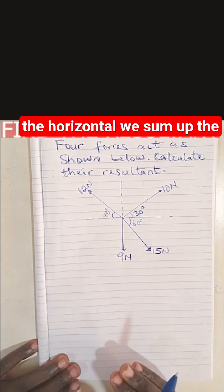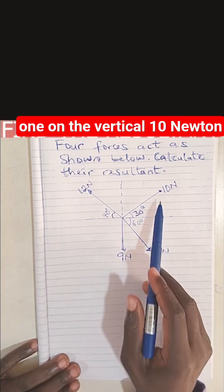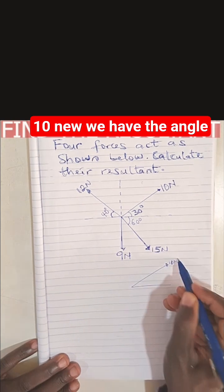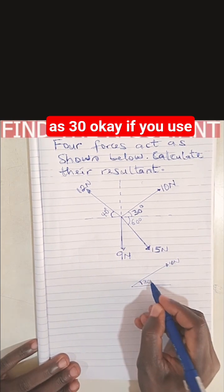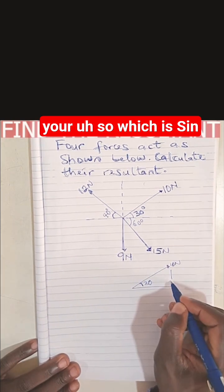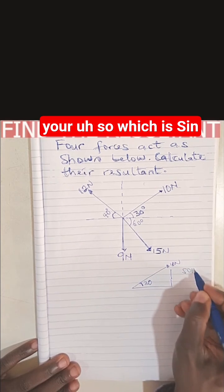Sum up the ones on the horizontal and the ones on the vertical. Let me take out the 10 Newton. We have the angle as 30 degrees. If you use your SOHCAHTOA, which is sine...